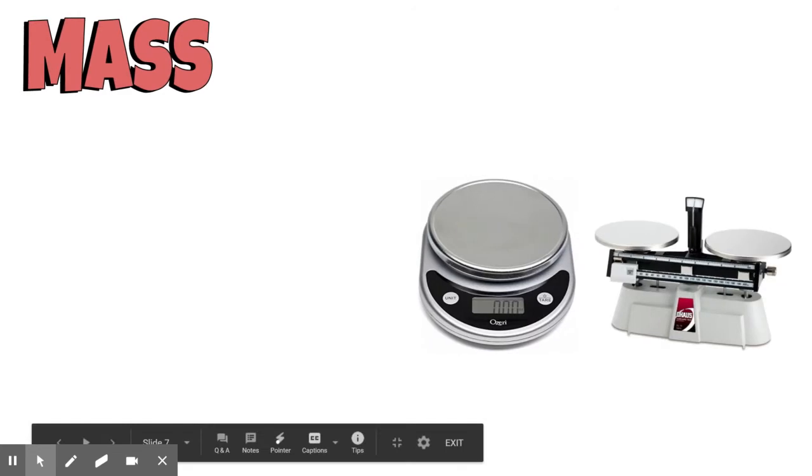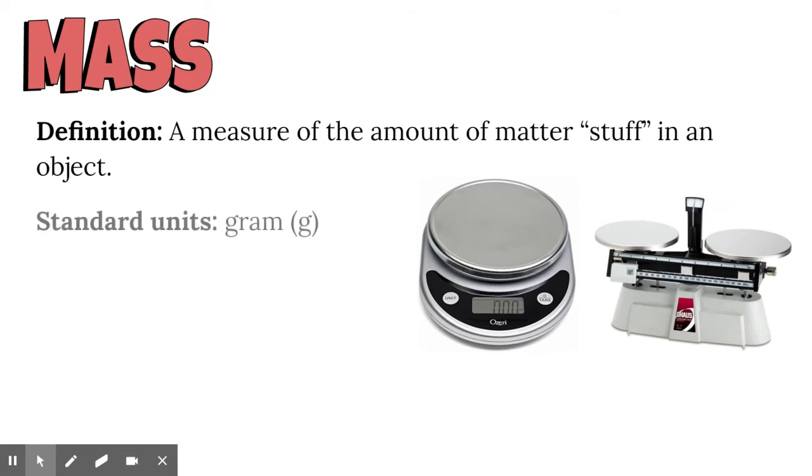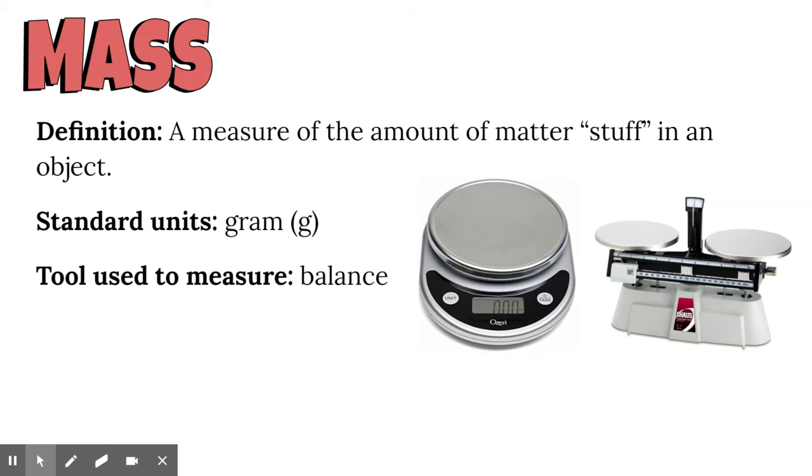That brings us to mass. Mass by definition is a measure of the amount of matter or stuff inside of an object. How much stuff fits into a certain volume, that's its mass. The standard unit for mass is a gram, represented with a lowercase g, and we use a balance to measure mass. These are not scales. Scales measure weight, and weight and mass are a little bit different. The one on the left is an electric balance, and the one on the right is a two-pan balance.